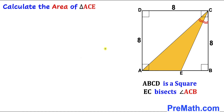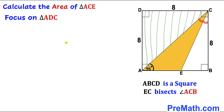Here's the very first thing we can see: AC is the diagonal of square ABCD, and we know that the whole angle is 90 degrees, so therefore the diagonal bisects it into two equal parts of 45 degrees each.